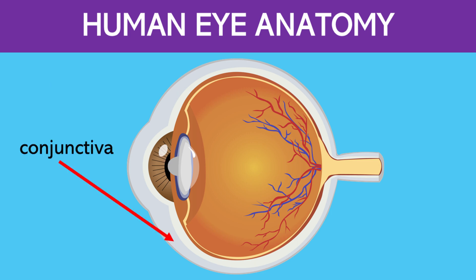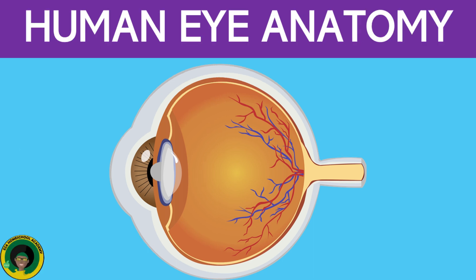Here is the conjunctiva. It is a thin, transparent membrane that covers the sclera and lines the inside of the eyelids. It helps protect the eye from infection and provides lubrication by producing mucus and tears.